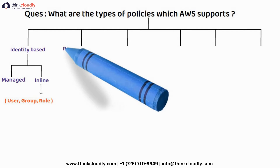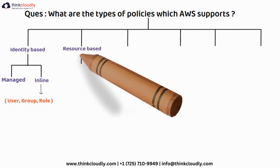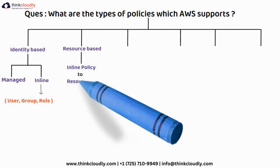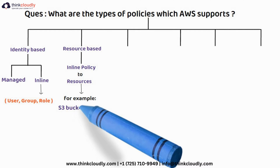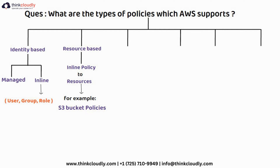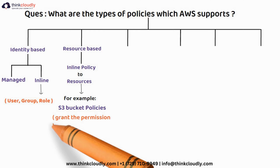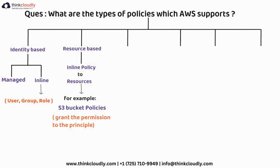The second type of policy is the resource-based policy. Resource-based policies are generally inline policies applied to resources. For example, S3 bucket policies — in an S3 bucket policy, you grant permission to a principal. The principal can be any user, group, or role. So you keep the resource in mind — in this case S3 — and you create the policy around it.